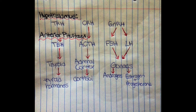Lastly, there is gonadotropin-releasing hormone. This hormone causes the anterior pituitary gland to secrete follicle-stimulating hormone, FSH, and luteinizing hormone, or LH. Depending on one's sex, LH will cause the gonads to stimulate the production of androgens for males and estrogen and progesterone for females. FSH will stimulate milk production in the mammary glands of females.